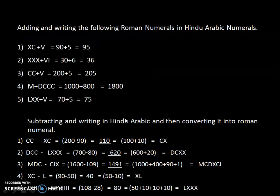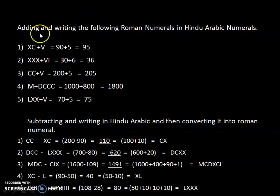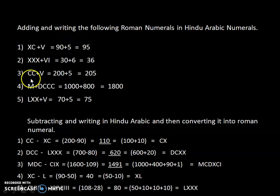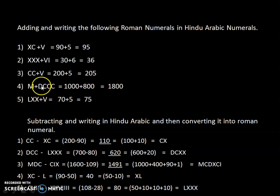Now let's see how we can apply operations. XC is 90 and V is 5, so XCV equals 95. CC means 200 and V means 5, so CCV equals 205. M means 1000 and DCCC means 800, so MDCCC equals 1000 plus 800, which is 1800.